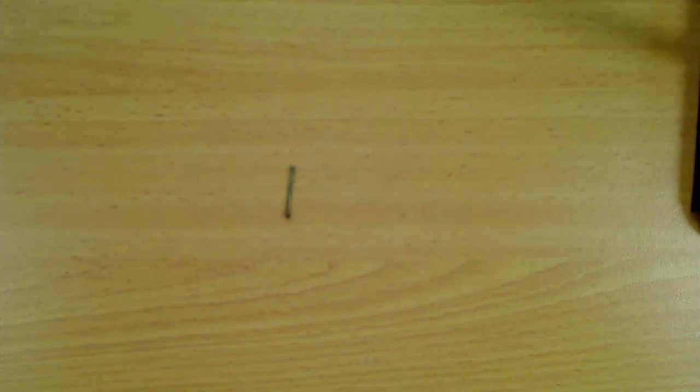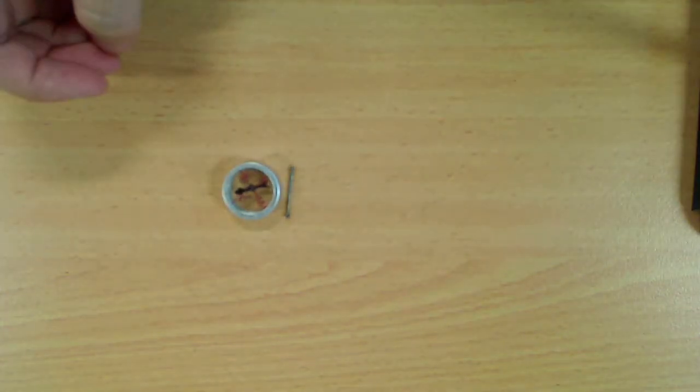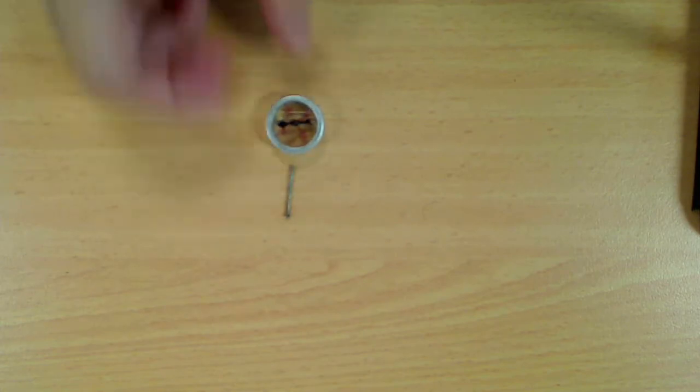And here I have a very small nail. Smaller chunks of iron are easier to magnetize than big ones. So moving this compass around the nail, you can see no movement in the needle, and so the nail is not magnetized.